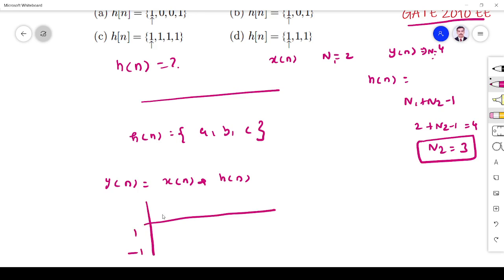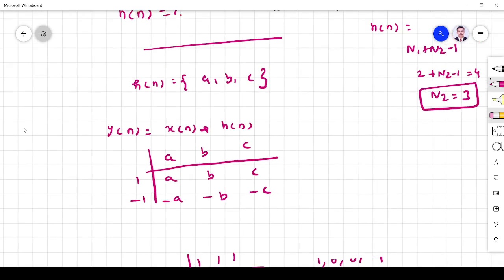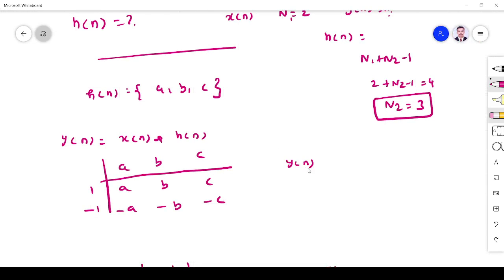x[n] equals {1, -1}, h[n] is {A, B, C}. Performing the convolution, y[n] equals A, then -A+B, then -B+C, then -C.